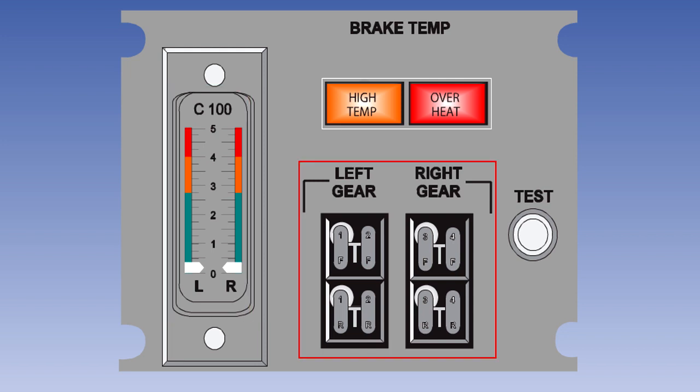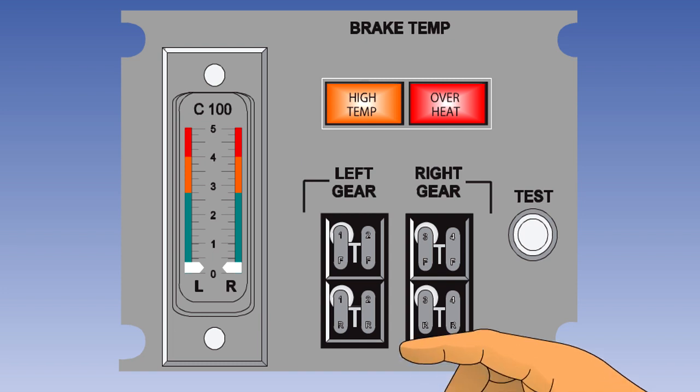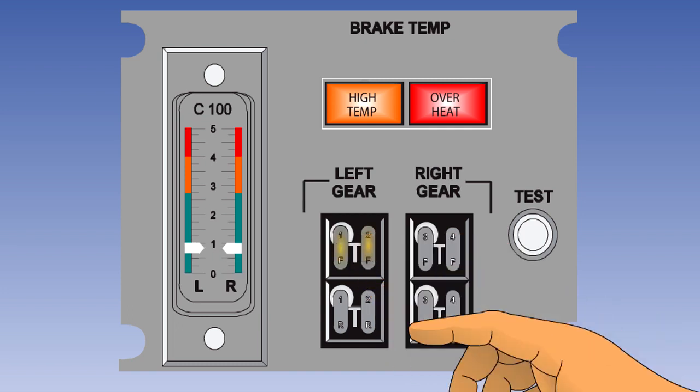The indicator has two pointers, labelled left and right. This particular aircraft has four wheels on each bogey. They are represented on the group of four mechanical push switches, only one of which can be depressed at a time. Each switch allows the brake temperature of a pair of wheels to be displayed on the indicator. For instance, if the left forward push button was pressed in, then the gauge would now be reading the temperature of the front pair of wheels on the left bogey.